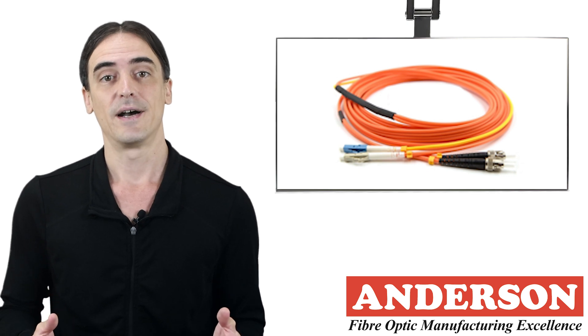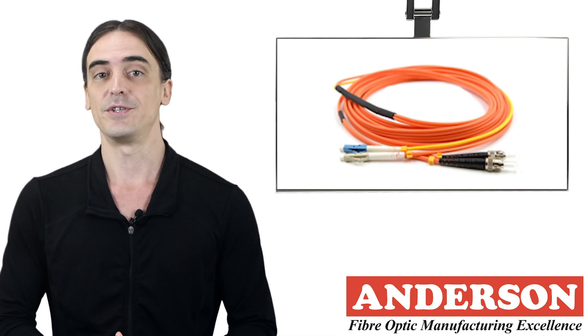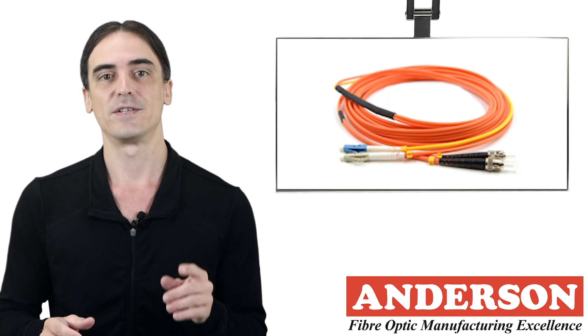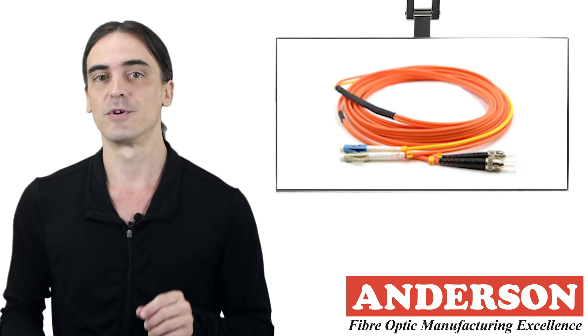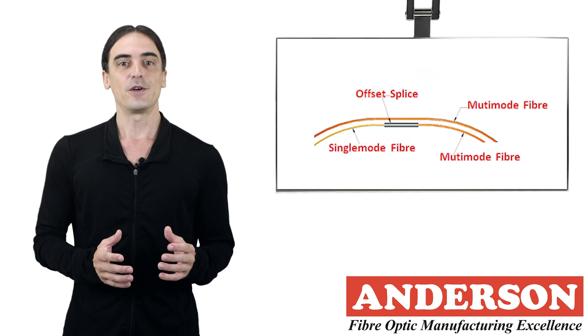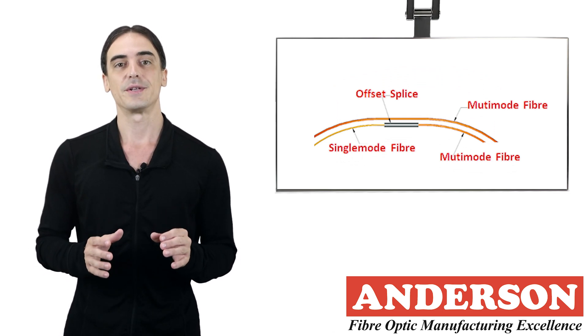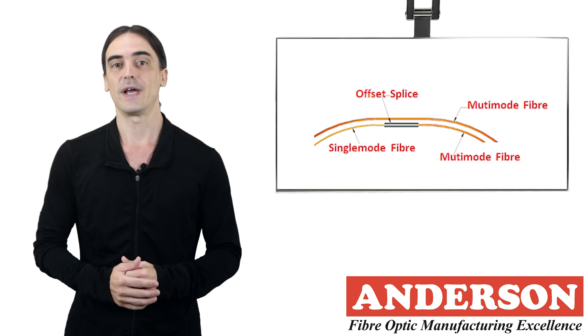To solve the issue of DMD, a mode conditioning patch cord is used. It is basically a multi-mode duplex patch cord that has one strand of single mode fiber spliced to it. The single mode launch is offset away from the center of a multi-mode fiber, creating a launch that is similar to that of a multi-mode LED.